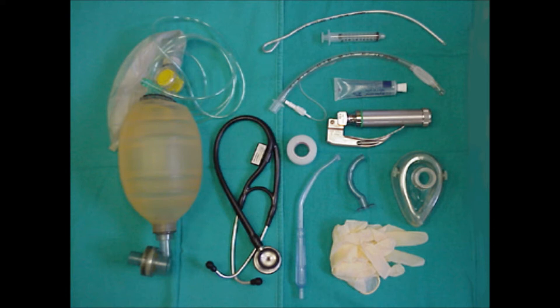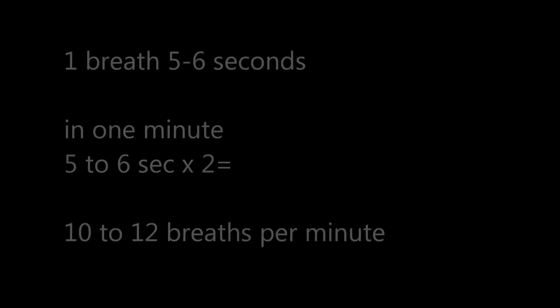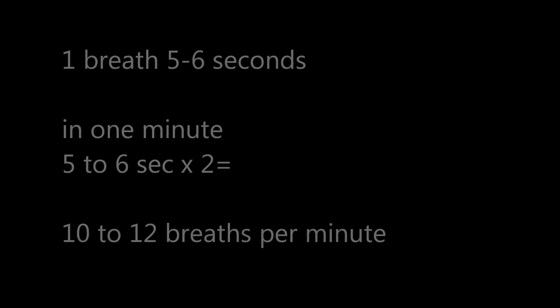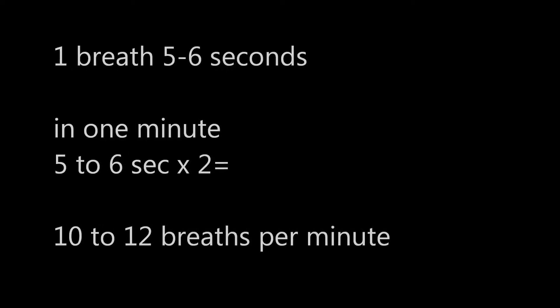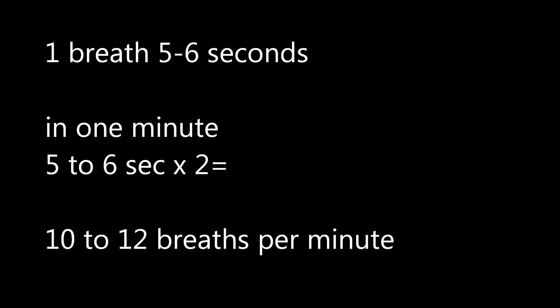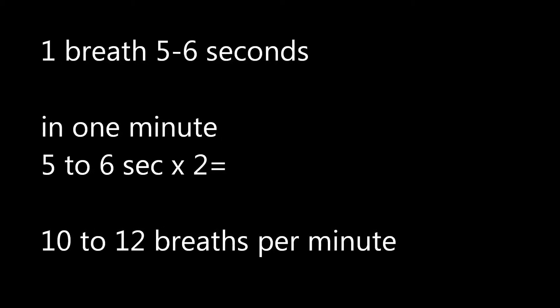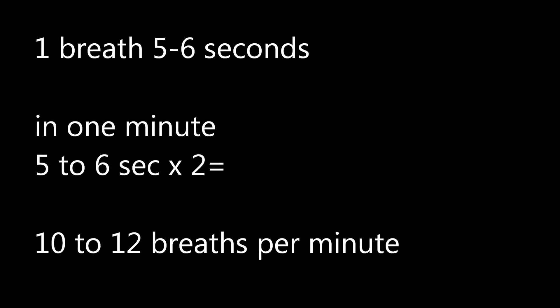In a respiratory arrest case where the patient has a pulse, you should ventilate the patient once every 5 to 6 seconds. To avoid confusion, once every 5 to 6 seconds — multiply by 2 — and you will get 10 to 12 breaths per minute.